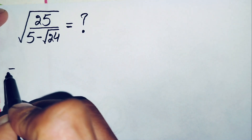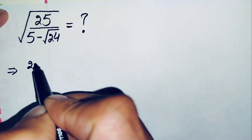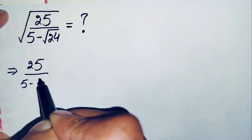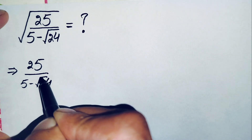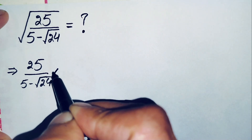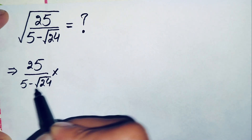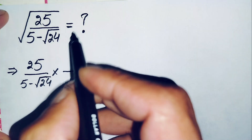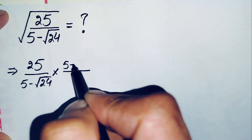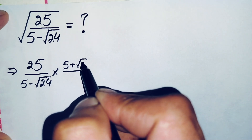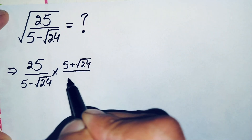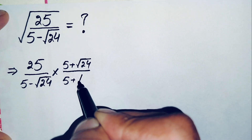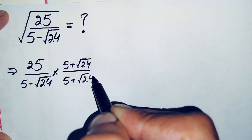The number inside is 25 divided by (5 minus square root of 24). We will rationalize this by multiplying by the conjugate. The conjugate of (5 minus square root of 24) is (5 plus square root of 24), so we multiply and divide by (5 plus square root of 24).